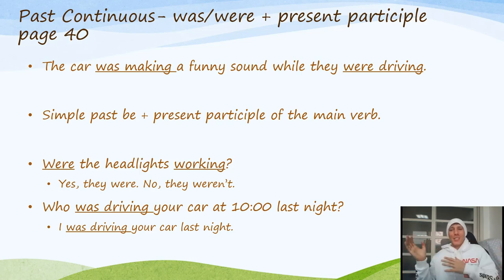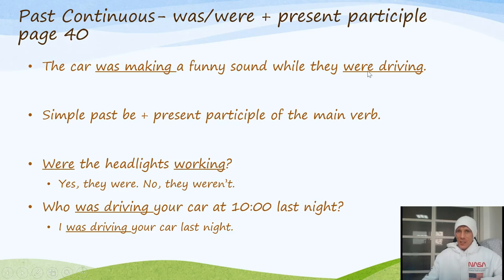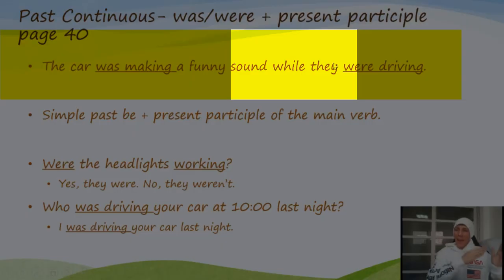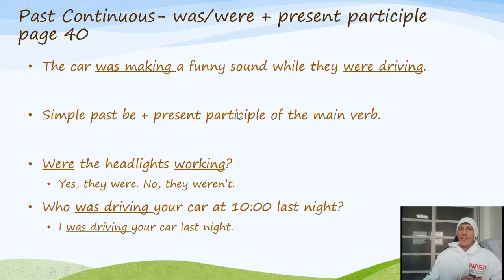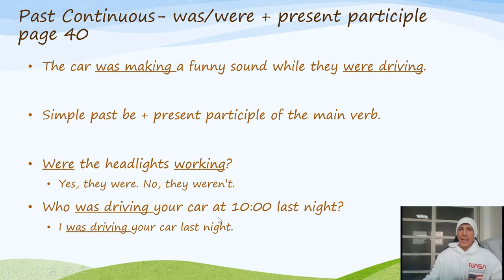Sometimes there are exceptions, but for our textbook and for my test, follow that rule. If one verb is 'was making' with -ing, the other one follows the same: 'were driving.' Both are happening in the past at the same time. In question form: 'Were the headlights working?' — 'Yes, they were' or 'No, they weren't.' 'Who was driving your car at 10 o'clock last night?' — 'I was driving your car last night.' These are all examples of the past continuous.